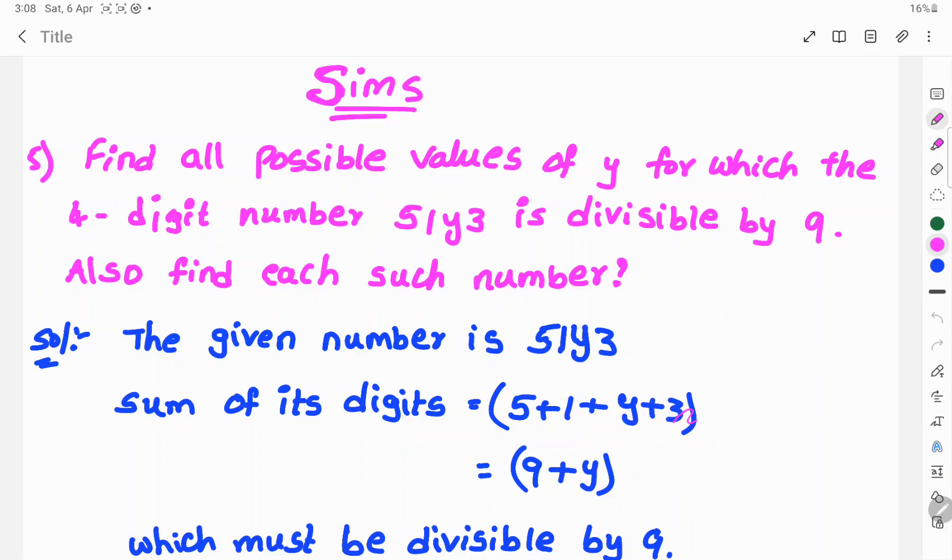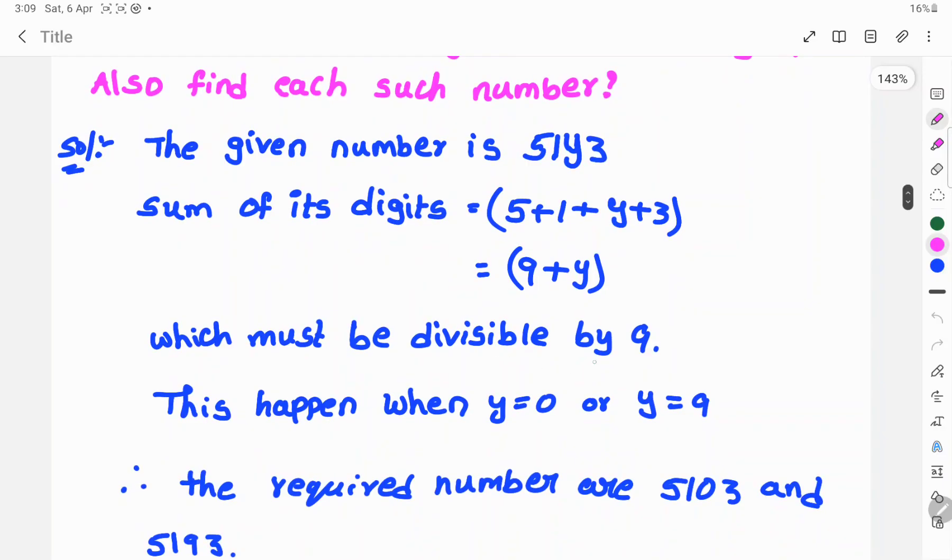So 5 plus 1 is 6, 6 plus 3 is 9 plus y, which must be divisible by 9. This happens when y equals 0 or y equals 9.